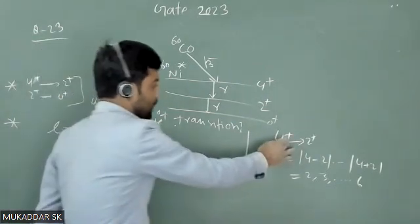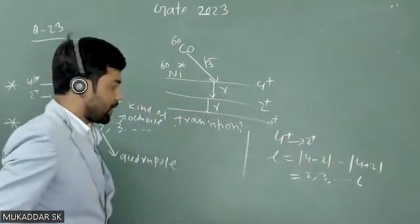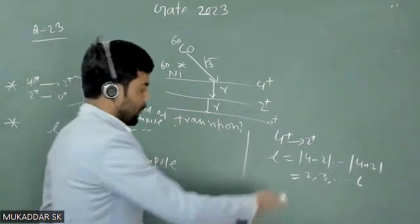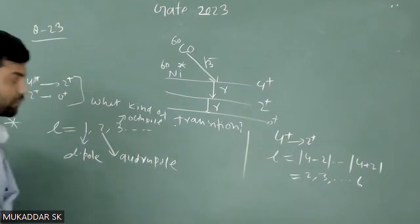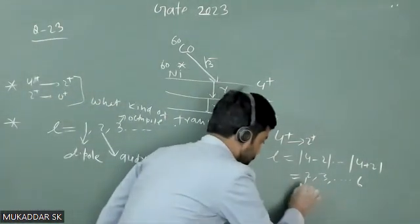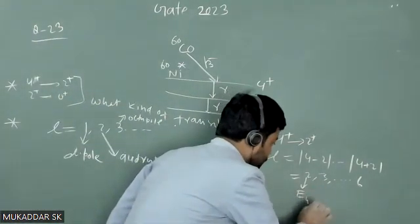I can see there is no change in parity. When there is no change in parity, even L will be allowed for electric, so you will get E2, E4, E6, and so on, and odd L are allowed for magnetic, so this will be M3.